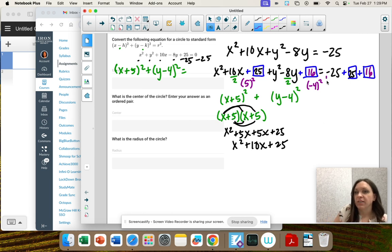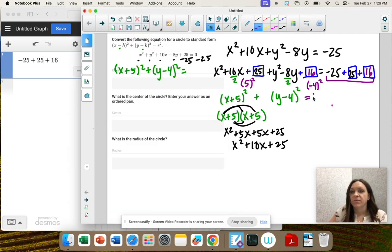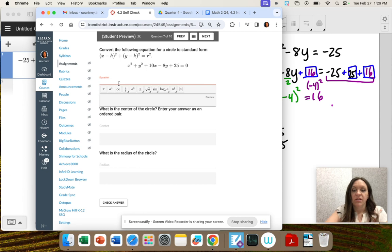So now let's simplify this. After the equal sign, we have negative 25 plus 25. What's that? 0 plus 16, which is 16. So that's the equation of our circle. We just completed the square to rewrite it in a different way. So x plus 5 squared plus y minus 4 squared equals 16.